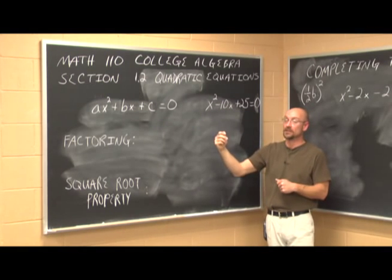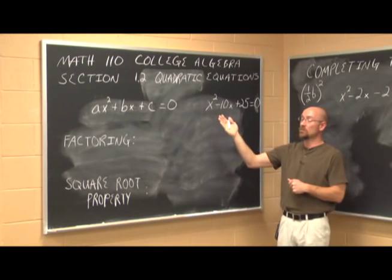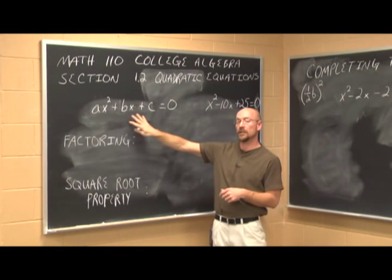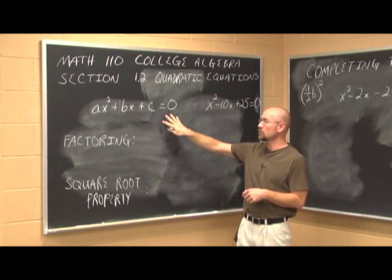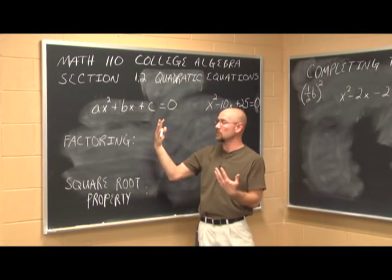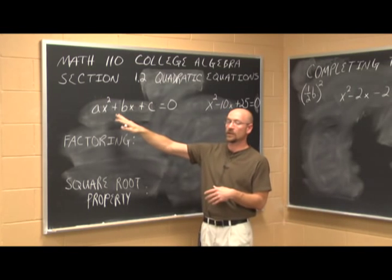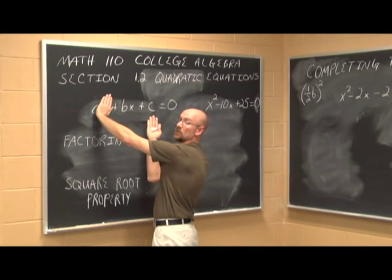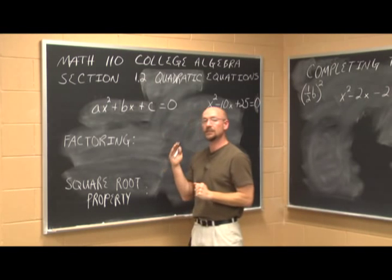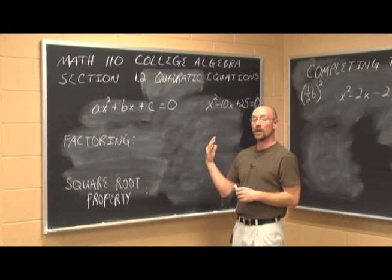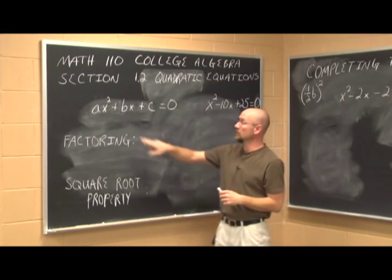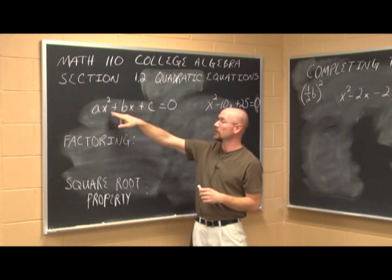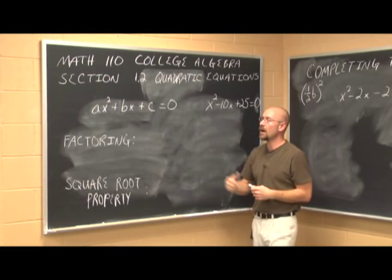If you recall, in the previous section 1.1, we dealt with linear equations. This is our quadratic equation in standard form, where a, b, and c are just real numbers, as long as a isn't 0. Because if a is 0, we're back to a linear equation. These are second degree equations because we have a squared variable as our highest power.